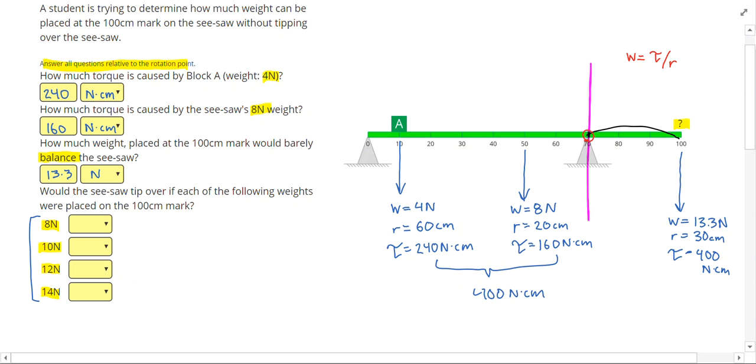So 13.3 newtons. If 13.3 newtons were placed right there, then that seesaw would kind of wobble. It would lose contact with that zero, and all the normal force would be on this right fulcrum. That's the critical amount of weight we can put on the right side. Let me draw a line between 12 and 14, because I know that 13.3 newtons is between 12 and 14. That means anything less than 13.3 won't be enough to tip over the seesaw. So my answers would be no for 8, 10, and 12, and my answer for 14 would be yes.